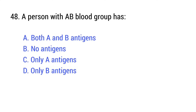Question number 48. A person with AB blood group has — the right answer is option A: Both A and B antigens.